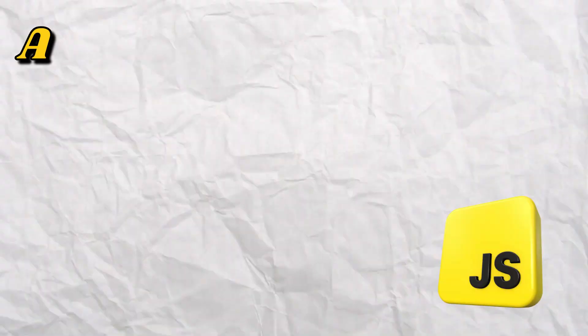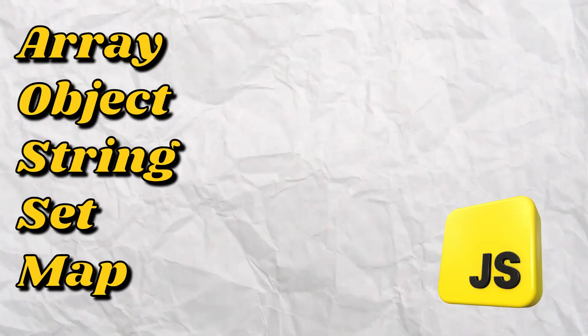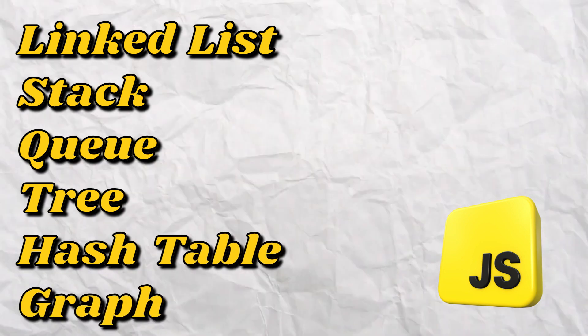Then we will learn about dynamic programming and solve a few questions on it, and then jump to greedy algorithms. Once we cover these five to six algorithms in JavaScript, it's time to learn about built-in data structures: array, object, string, set, and map. Most interview questions come from these five concepts. Then we jump to custom data structures: linked list, stack, queues, trees, hash table, and graph. These topics are asked by big MNCs, while built-in data structure questions are typically asked by startups.